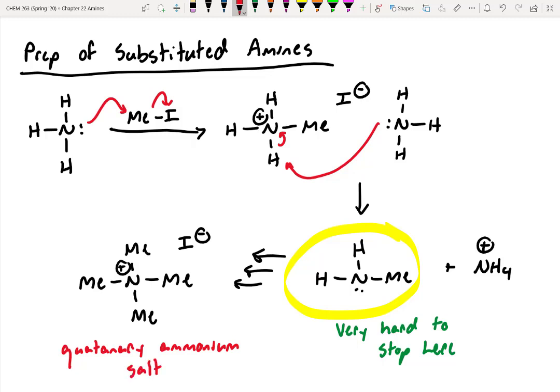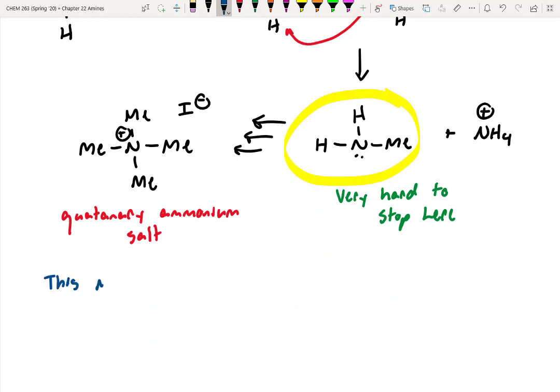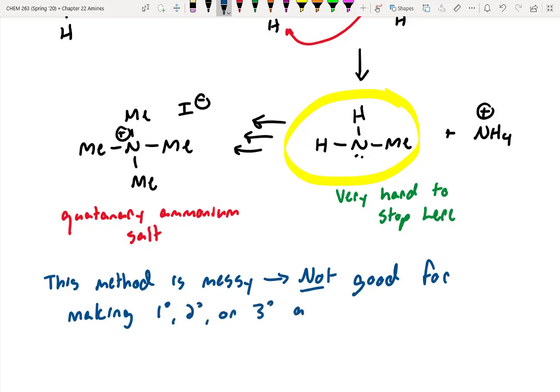So this SN2 technique is only really good if you want the quaternary ammonium salt. It's not very good if you want to stop at a primary, secondary, or a tertiary amine. So we'll make a note down here. That this method is messy, meaning it is not good for making primary, secondary, or tertiary amines. It kind of runs out of control. Like I said, it's just going to find any starting alkyl halide, and it's going to alkylate really fast.